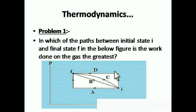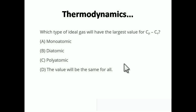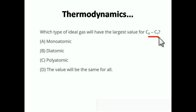This type of question is frequently asked in JEE Main and other competitive exams. Now here is a very important question covering a key topic: which type of ideal gas will have the largest value of CP minus CV? As we saw in the previous video, CP minus CV equals R.